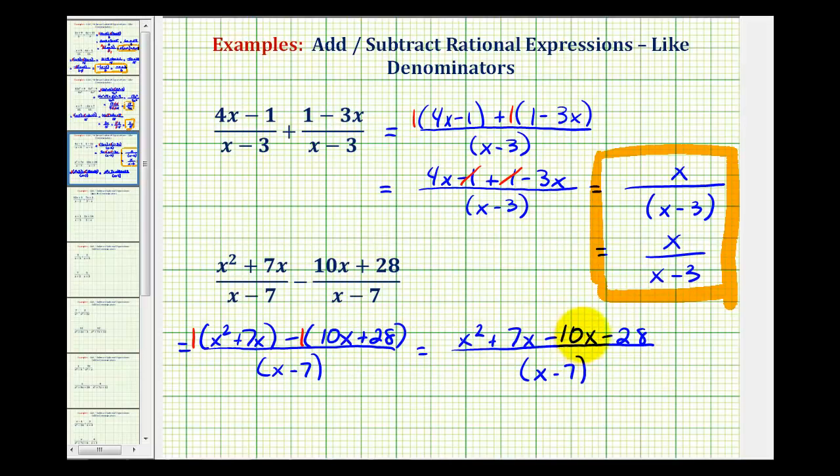Now we'll combine the like terms in the numerator. 7x minus 10x would be negative 3x. So we'll have x squared minus 3x minus 28, all over the quantity x minus 7.